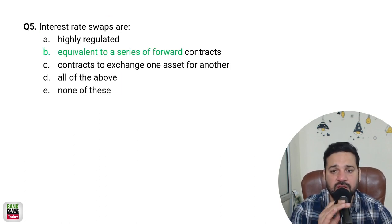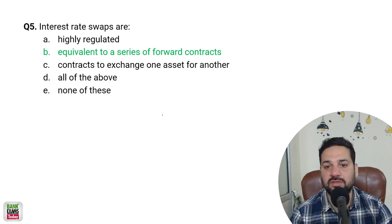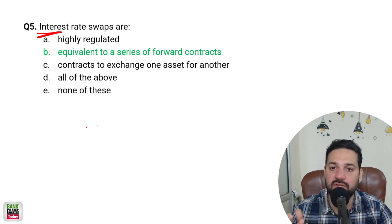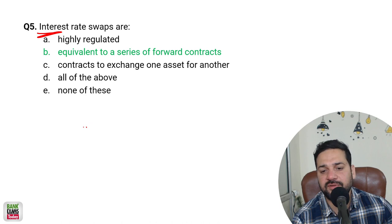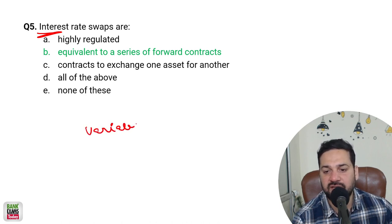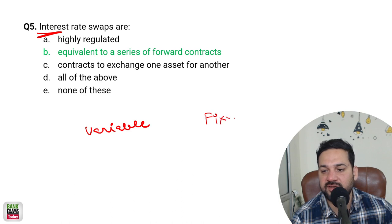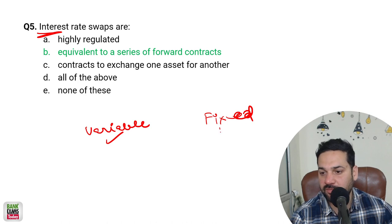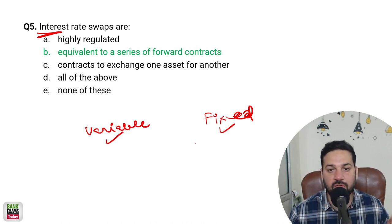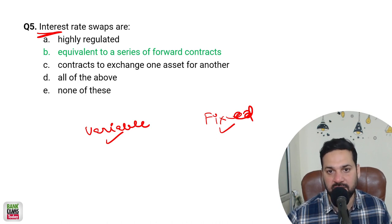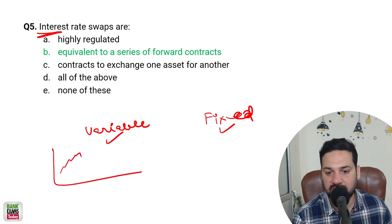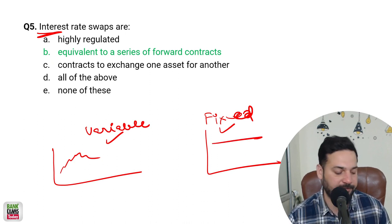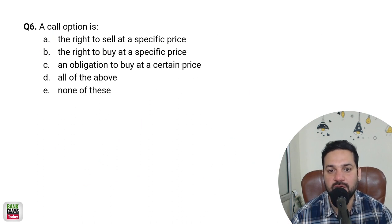Interest rate swaps are equivalent to a series of forward contracts. One person has a variable interest rate loan, the other has a fixed interest rate loan, but the variable person wants fixed and the fixed person wants variable — so they swap or exchange their interest payments. The variable interest payment keeps changing while the fixed rate stays constant, and they exchange the payments accordingly.